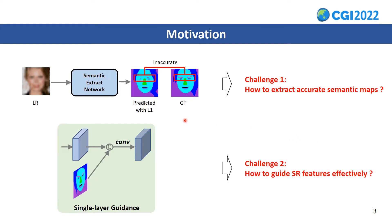To utilize the semantics prior to assist face super-resolution, there are two key steps. First, to extract the semantic maps from low-resolution images. Second, to use the semantic maps to guide super-resolution features. For the former, some prior works directly use L1 loss to supervise the extraction of semantic maps, but this is not accurate. An accurate semantic map is better for guidance, so how to extract accurate semantic maps is a challenge.